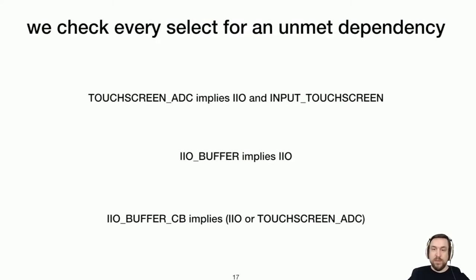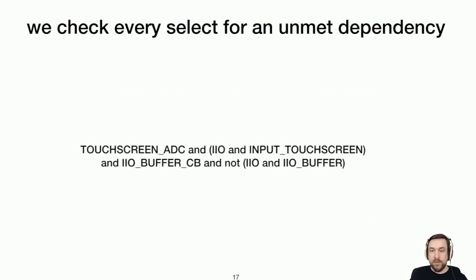Once we have all of these formulas modeled for the whole kconfig specification, because these dependencies can cross over any possible files, we then take every combination of options that have a select reverse dependency relationship and turn them into a formula that describes that condition of the unmet dependency. So in this case, the formula is getting much larger. But the idea is that if the direct dependencies are turned off IIO buffer CB and not its direct dependencies, but its reverse dependency touchscreen ADC is turned on and all the direct dependencies it has, then if that formula can ever be true, then we have what potentially is one of these unmet dependency bugs.